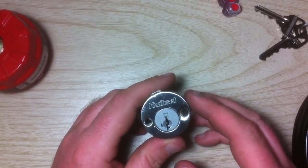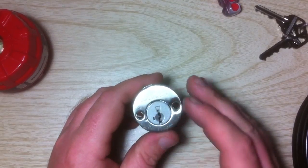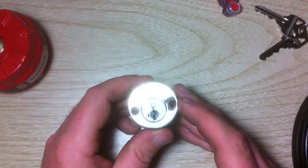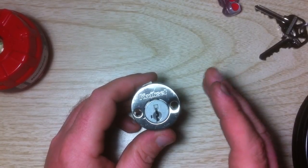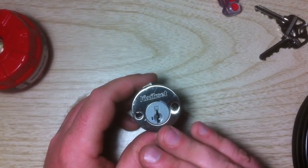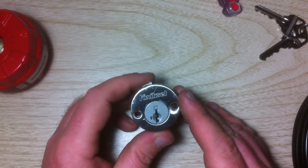Kwikset smart key is something Kwikset came up with so you can rekey your locks at home without having to call a locksmith out or without having to take your locks off and drop them off at the locksmith shop. This is for your do-it-yourself rekey at home, which to me is a pretty cool feature.